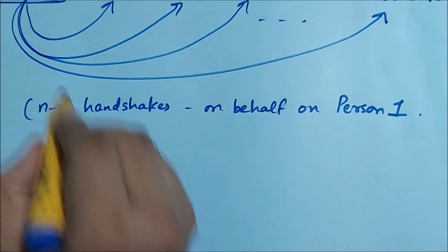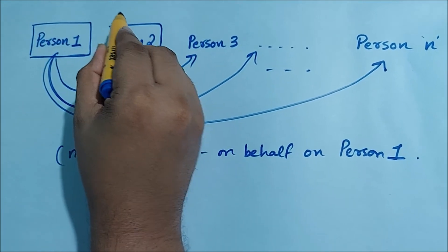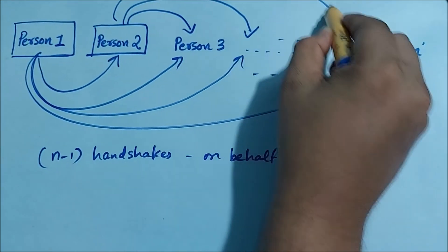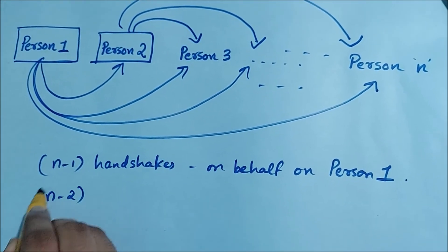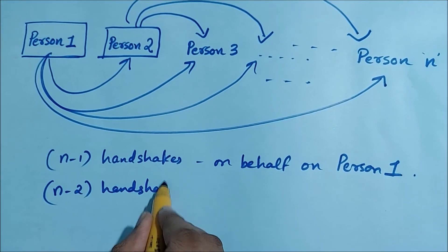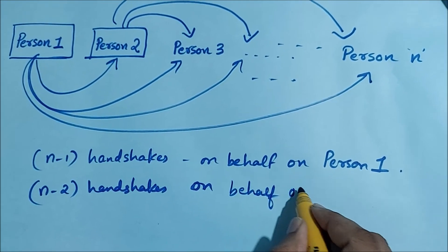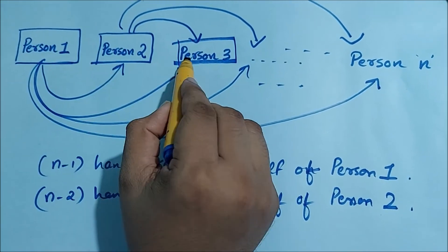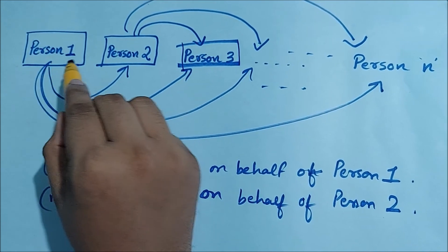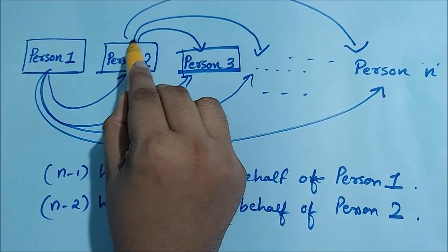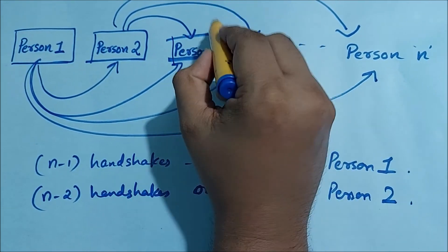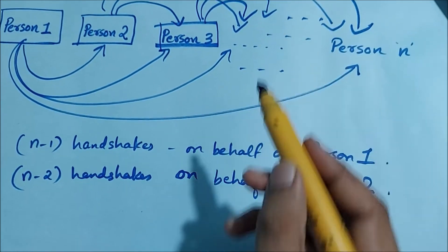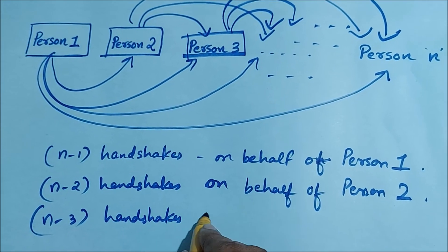Next is person 2's turn. Person 2 will not make a handshake with person 1 again because that handshake has already been done. Person 2 will make handshakes with person 3, person 4, and so on till person n — so we count n-2 handshakes for person 2. Then person 3 will not shake hands with person 1 or 2, since those have already happened, so person 3 shakes hands with person 4 onwards — giving n-3 handshakes.